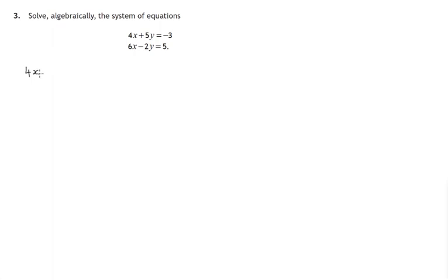The first equation is 4x plus 5y equals negative 3. The second equation is 6x minus 2y equals 5. Now each equation has two variables, x and y. The way we've written these equations we've lined up the x variables and we've lined up the y variables.